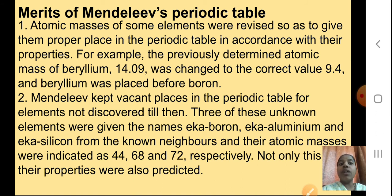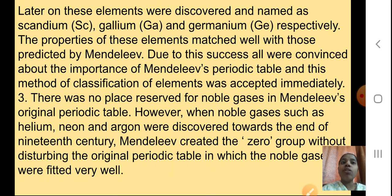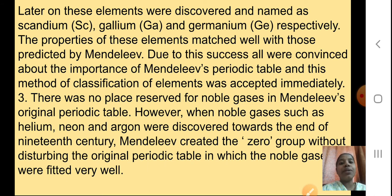Three of these unknown elements were given names: Eka-boron, Eka-aluminium, and Eka-silicon. From the known neighbouring elements, their atomic masses were indicated as 44, 68, and 72 respectively, and their properties were also predicted. Later on, these elements were discovered and named as Scandium, Gallium, and Germanium respectively. The properties of these elements matched well with what was predicted by Mendeleev. Due to this success, all were convinced about the importance of Mendeleev's periodic table and this method of classification was accepted immediately.